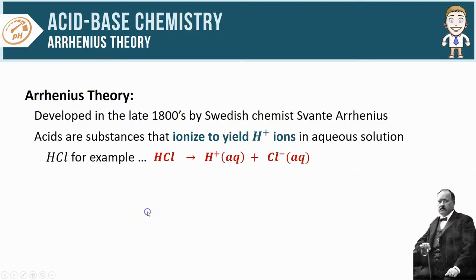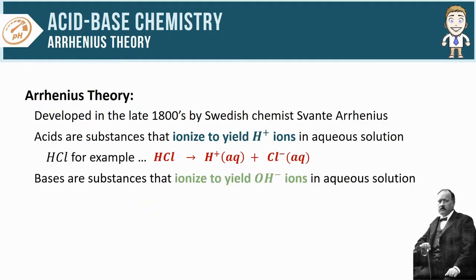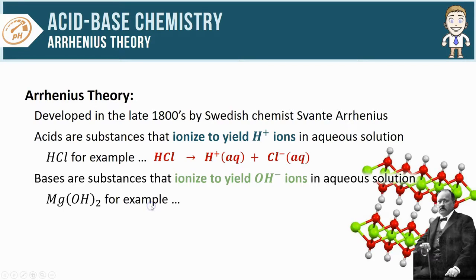Arrhenius also described bases in a similar way. He said that bases are substances that ionize to yield hydroxide ions in aqueous solution. Let's do the same thing and write an equation to show how this works for a substance like magnesium hydroxide Mg(OH)2. We'll start in a similar way by putting the substance in question on the reactant side of the equation: Mg(OH)2.